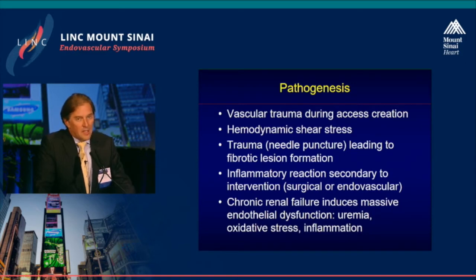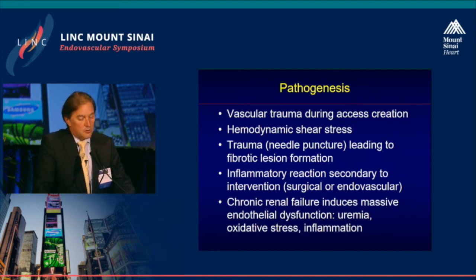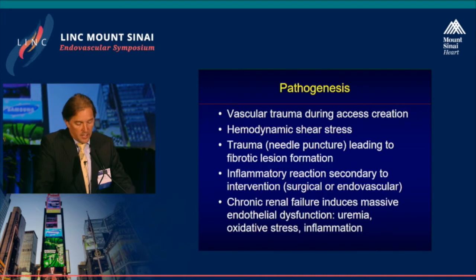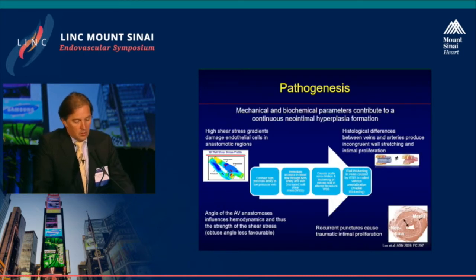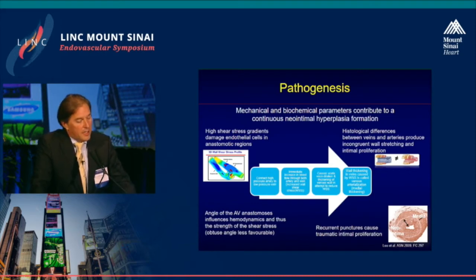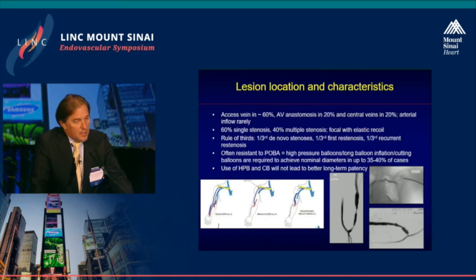The pathogenesis is the vascular trauma occurring during access creation, then the occurrence of hemodynamic shear stress trauma leading to fibrotic lesion formation, and an inflammatory reaction secondary to any intervention that occurs afterwards — like surgical corrections or endovascular procedures. Last but not least, chronic renal failure induces massive endothelial dysfunction because of uremia, oxidative stress, and inflammation. You can see all the factors listed, and on the right-hand side one other very important factor is the histological differences between veins and arteries.